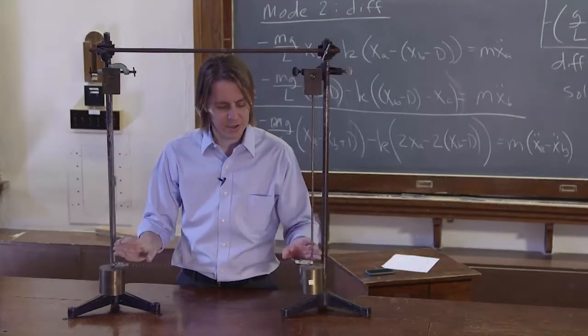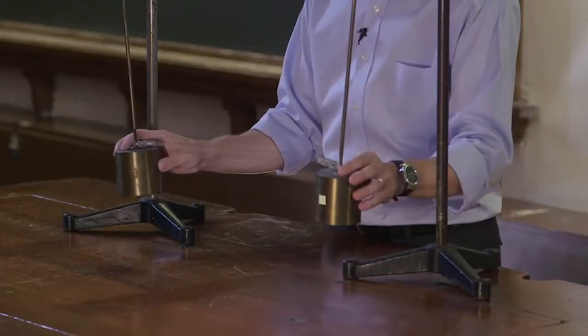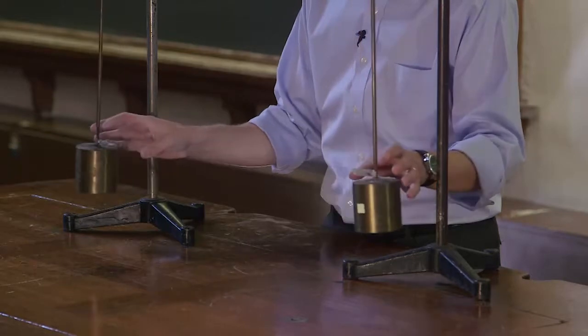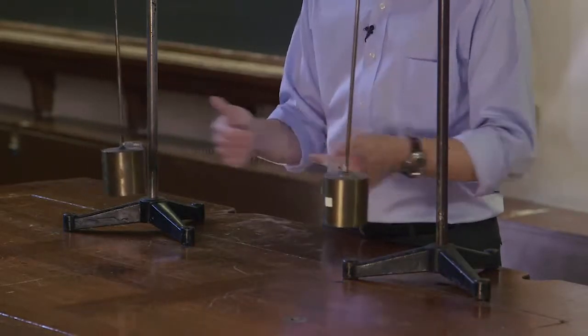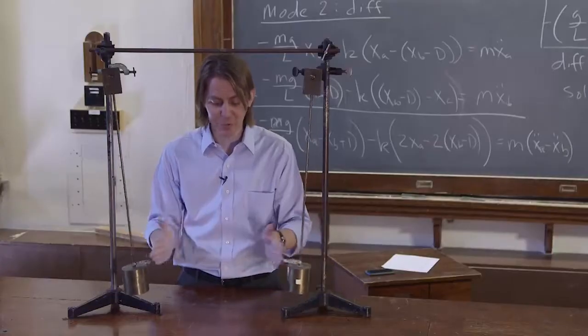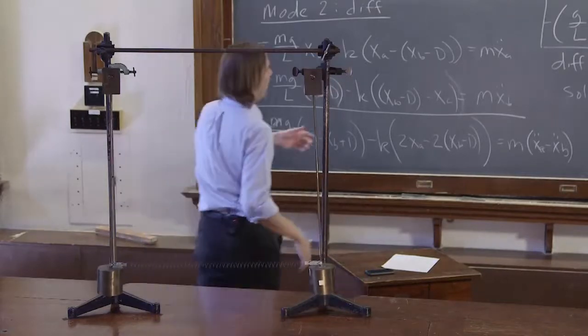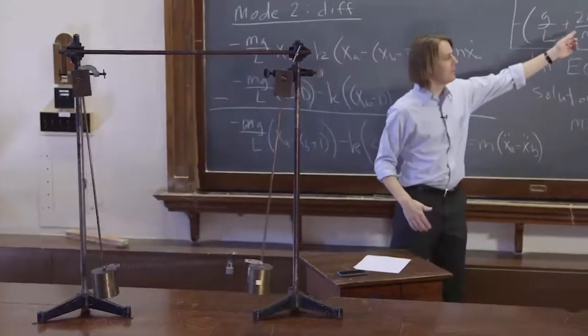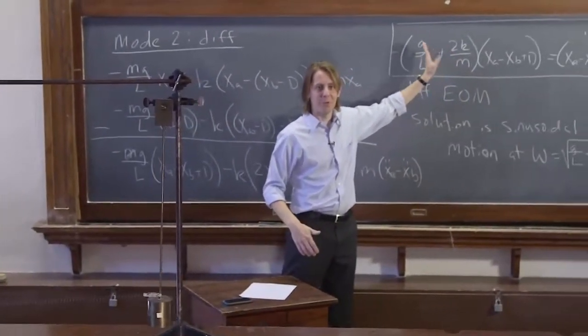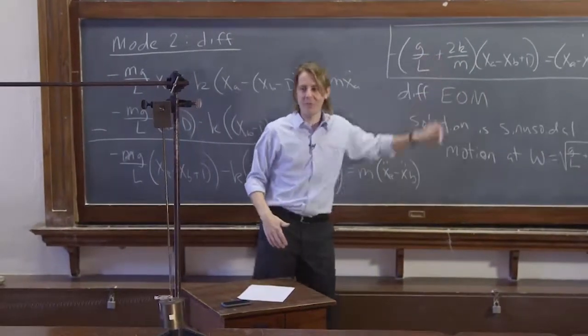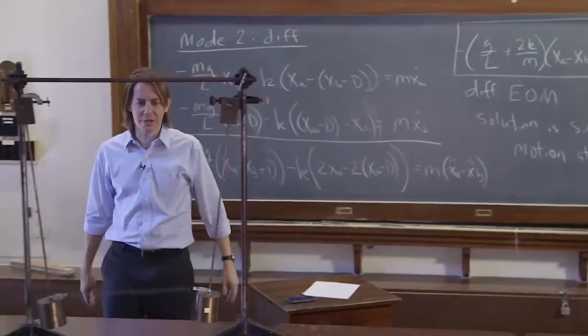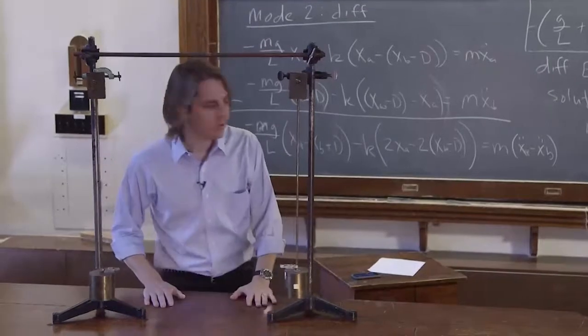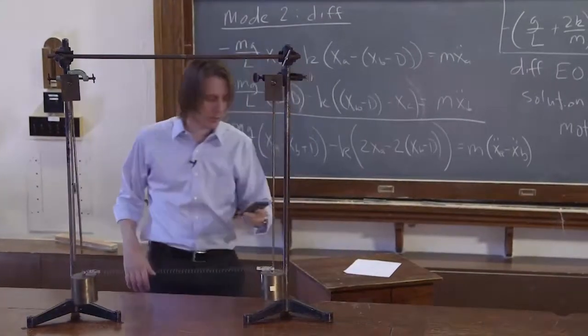And before we measure the spring constant, or before we measure the rate, we can think about it a little bit. This one does involve the spring, clearly. The spring is moving, the spring is applying forces. And sure enough, our equation of motion does involve the spring. So unlike the sum mode where it took the spring out, physically this keeps the spring in. And it's good because the spring is actually doing something. So now let's see how many periods we're looking at.